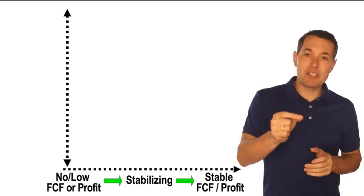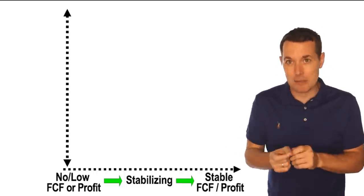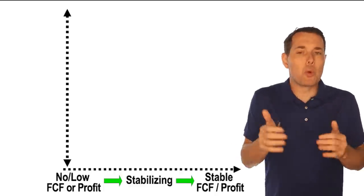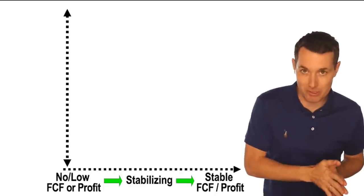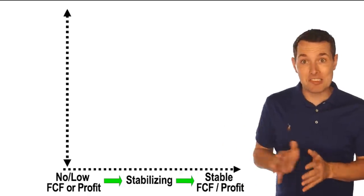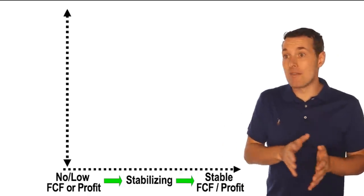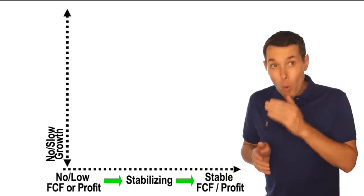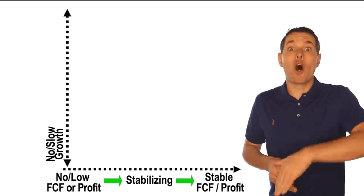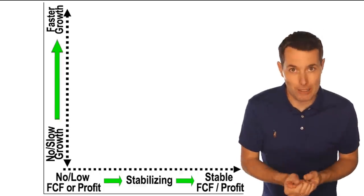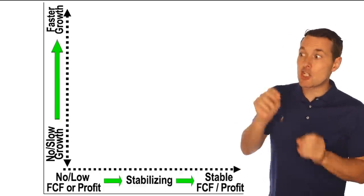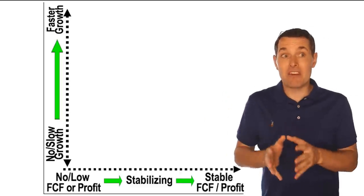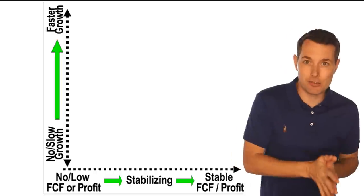By the way, profit and net income are the same thing — those two words are used interchangeably. On the Y axis, we have a company that has no growth or negative growth, going all the way up to a company that is fast growing. We don't have an actual percentage tied to that because that will vary a lot from industry to industry, so depending on the industry you look at, the vertical axis could change.